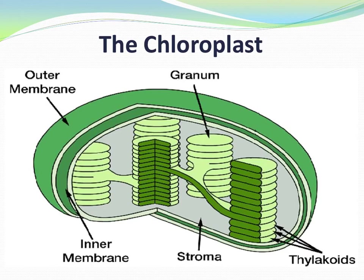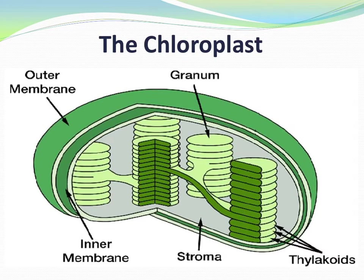There are three important parts found inside of a chloroplast. The first is a thylakoid — a thin round disc, kind of like a green Girl Scout cookie, that forms stacks known as grana. A single stack is known as a granum. And surrounding the grana is a thick liquid called stroma. That's it: thylakoid, grana, stroma. And now that you have an understanding of chloroplast structure, let's get back to photosynthesis.